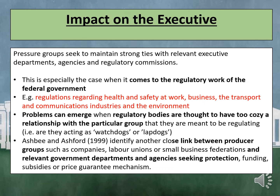Pressure groups also seek to maintain strong ties with relevant executive departments, agencies, and regulatory commissions. This is especially the case when it comes to the regulatory work of the federal government — for example, regulations regarding health and safety at work, business, the transport and communications industry, and the environment. Problems can emerge when regulatory bodies are thought to have a too cosy relationship with a particular group they are meant to be regulating — for example, are they acting as watchdogs or as lapdogs? Ashby and Ashford in 1999 identified another close link between producer groups such as companies, labour unions, or small business federations and relevant government departments and agencies seeking protection, funding, subsidies, or price guarantee mechanisms.